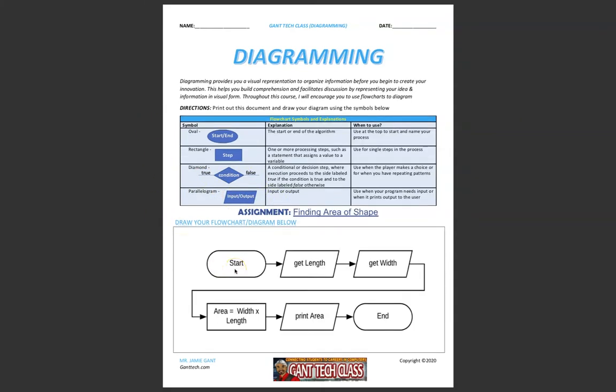Here's an example of diagramming on finding the area of a shape. First, we start with an oval. We get the length, which is input and output, so we have a parallelogram. We get the width, again, input and output. We do a step here. Area is equal to the width times the length, so we use a rectangle. We print the area. That is output, so we use a parallelogram. And then we have the end of our program, so we use an oval.